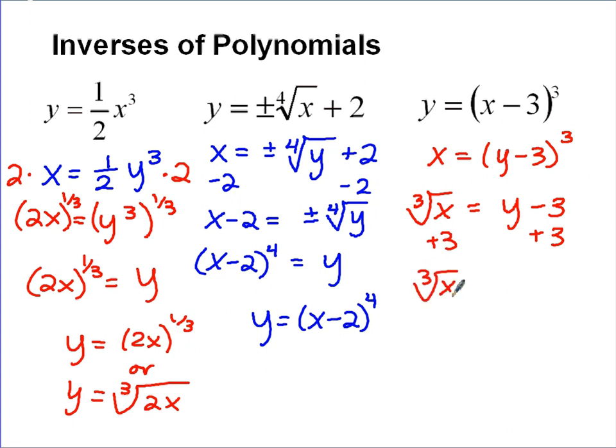Now the last thing we have to do is just add 3 to both sides, so I get the cube root of x plus 3 equals y. Be careful when you're writing this to make sure that you keep this plus 3 out of the root and not under it. And that's how you take an inverse of a polynomial.